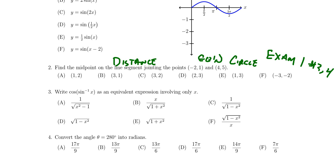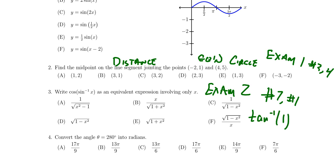Question number three is going to be a topic from exam two about inverse trigonometry. For example, we have cosine of sine inverse of x — how can you rewrite that without any trigonometry, purely in algebraic form? That's something we did for question seven on exam two. Also, can you compute something like tangent inverse of one without a calculator? So question three will be about inverse trigonometric functions, while question two covers elementary geometry from chapter one that doesn't really involve triangles.